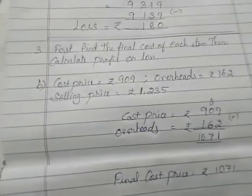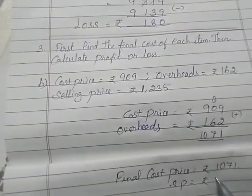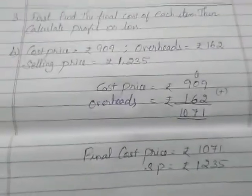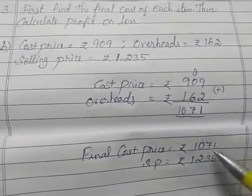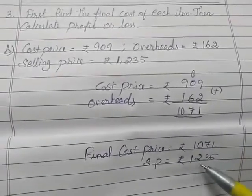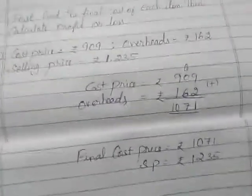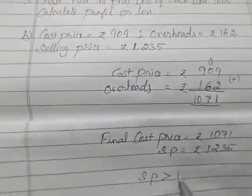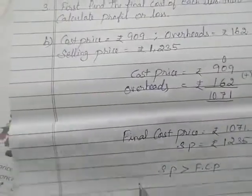So selling price is ₹1235. Now we can find profit or loss. See which is greater. So selling price is greater than the final cost price. So selling price greater than final cost price. So this is profit.